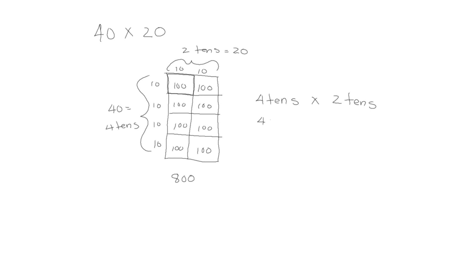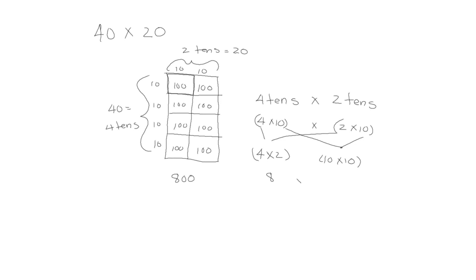We can write this as 4 times 10 and 2 times 10. Then, as before, we can change the grouping — we put the 4 and the 2 together, and we put the 10 times 10 together. So we have 8 times 100. We know 10 times 10 is 100, so 8 hundreds is 800.